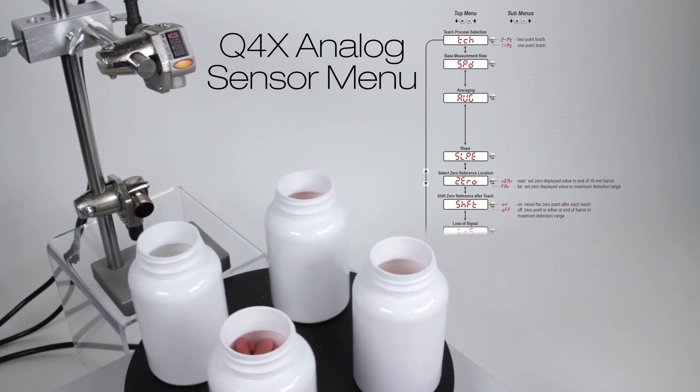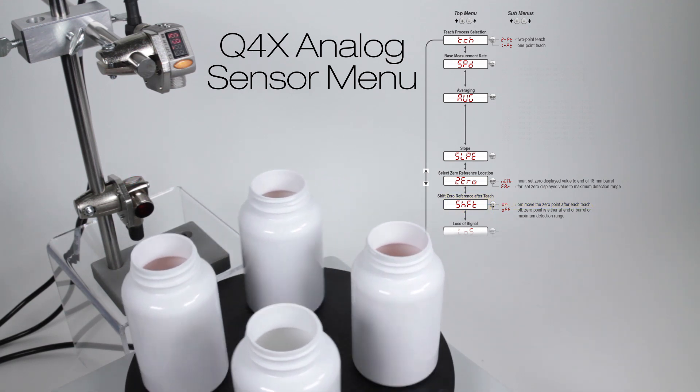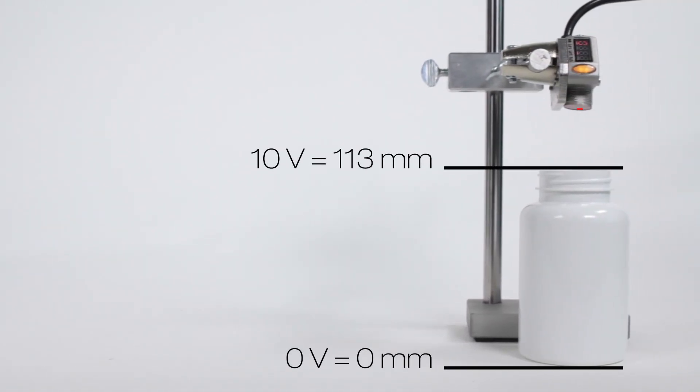With these settings, the display measurement will be relative to the zero-volt taught point. In this example, the bottom of the bottle is set as a zero-volt signal, and the top of the bottle will be a 10-volt signal.